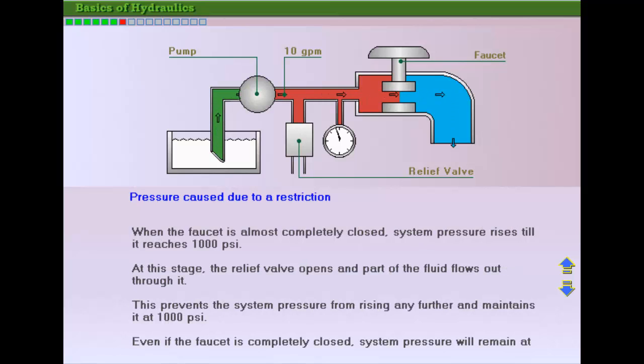The faucet is closed still further, and the system pressure rises. It reaches 1000 psi. The relief valve opens and part of the fluid flows out through it. This prevents the system pressure from rising any further, and the system pressure is maintained at 1000 psi.